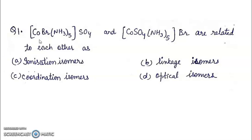Since their molecular formula is same, but they will give different ions on ionization. First compound will give sulfate ion and second compound will give bromide ion. So they are ionization isomers.